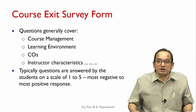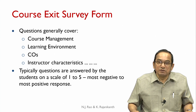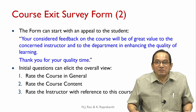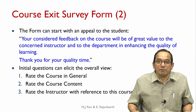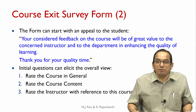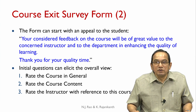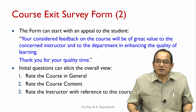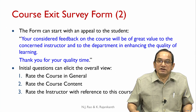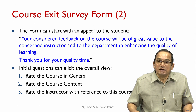Typical questions are answered by students on a scale of one to five, one being the most negative and five being the most positive, though other scales are possible. The form can start with an appeal to the student: 'Your considered feedback on the course will be of great value to the concerned instructor and to the department in enhancing the quality of learning. Thank you for your quality time.' There is considerable empirical evidence that such an appeal at the beginning of the exit survey form has a psychological impact on students and often leads them to take the survey more seriously.